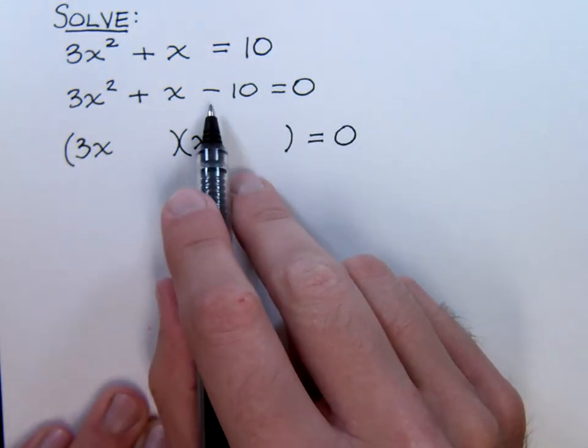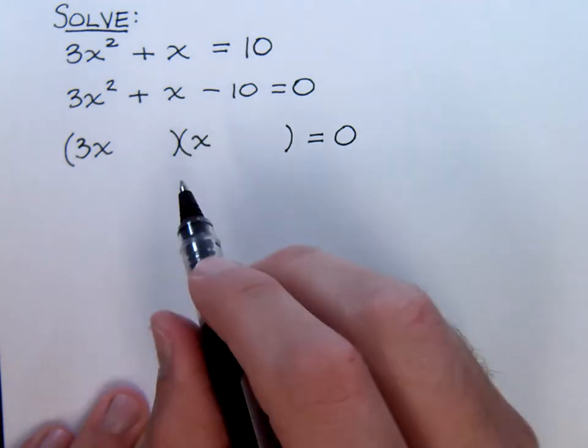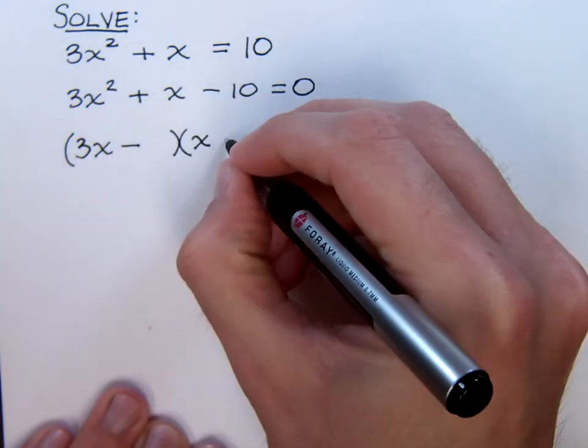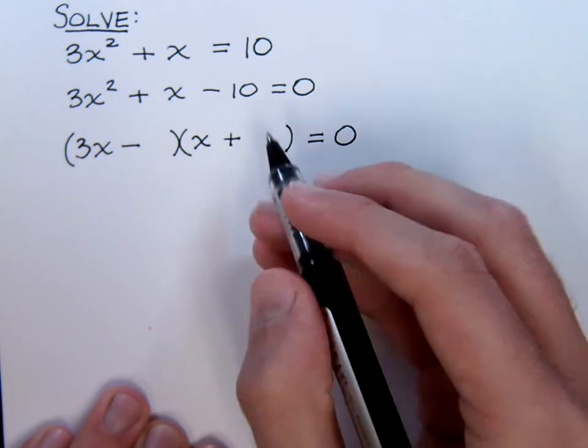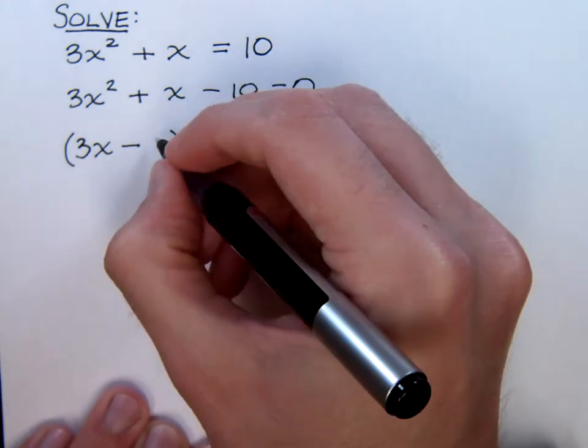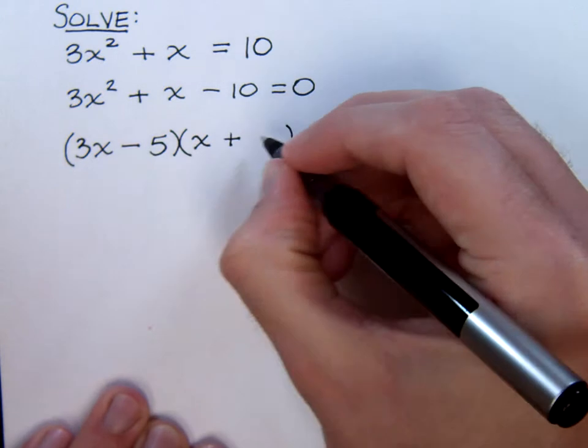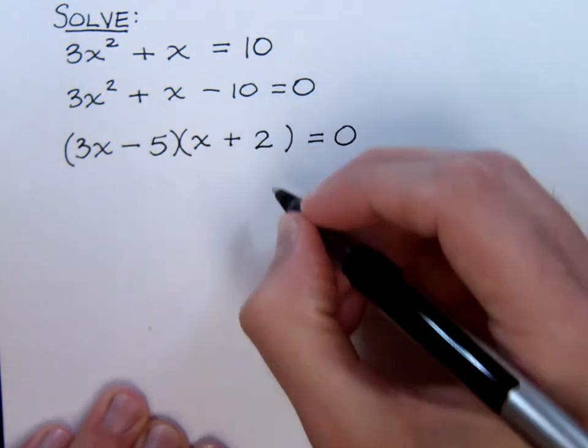Since we have to multiply to get a negative 10, we know we have to use one positive and one negative. And then the right way for us to break down the 10 in this case is going to be with a minus 5 and a positive 2.